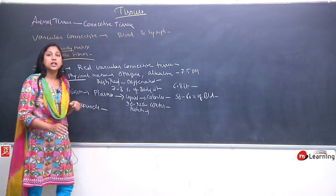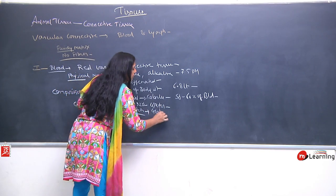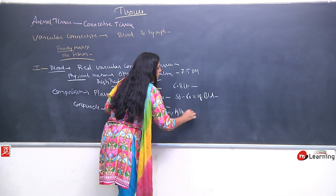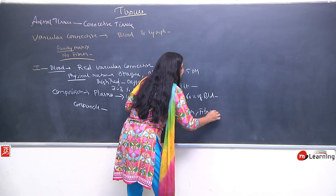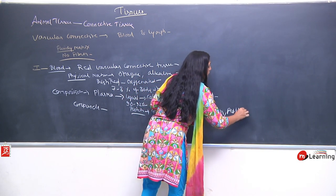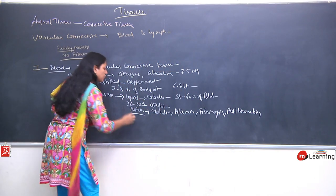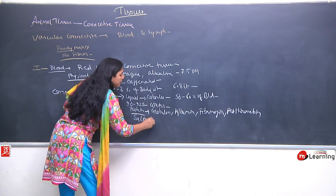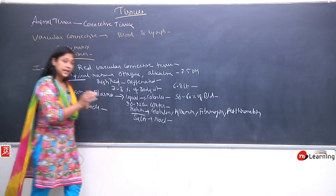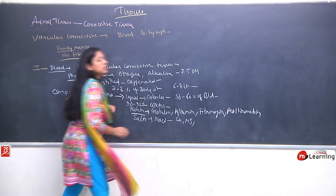The proteins found in plasma include globulin, albumin, fibrinogen, and prothrombin. Plasma also contains minerals such as sodium chloride, calcium, and magnesium.